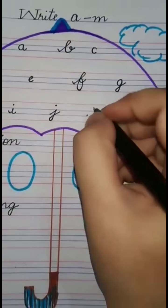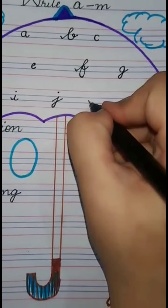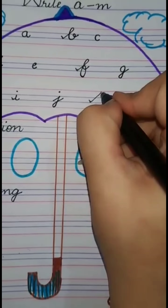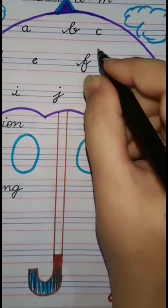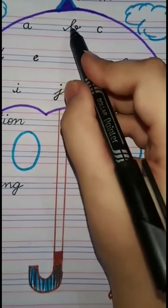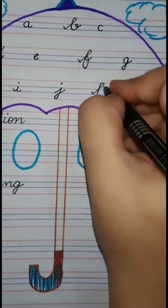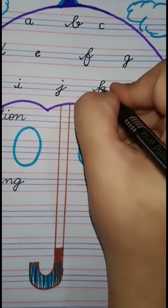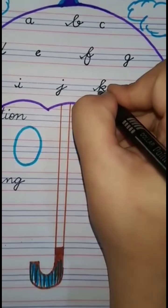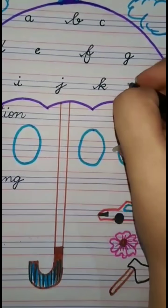Next is ka. First you make a tick, curve down, and cut it on the second line, like fa and ba. Then make an ae, and then leg out. Ka - King.